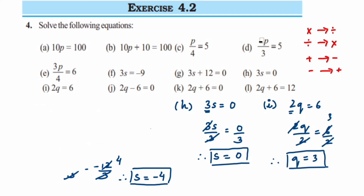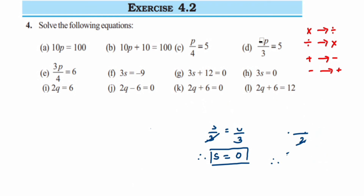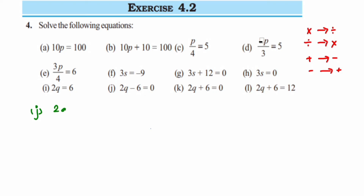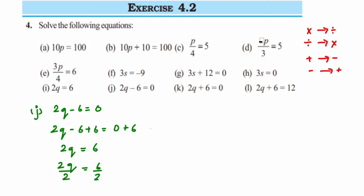Problem j: 2q - 6 = 0. The -6 is under subtraction, so add 6 on both sides. Minus 6 plus 6 becomes 0, so 2q = 0 + 6 = 6. Now divide 2 on both sides: the 2s cancel and 6/2 = 3. Therefore q = 3 is the answer.